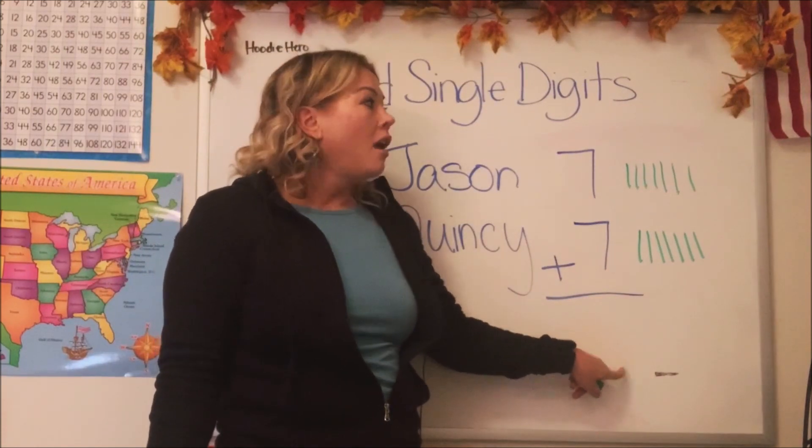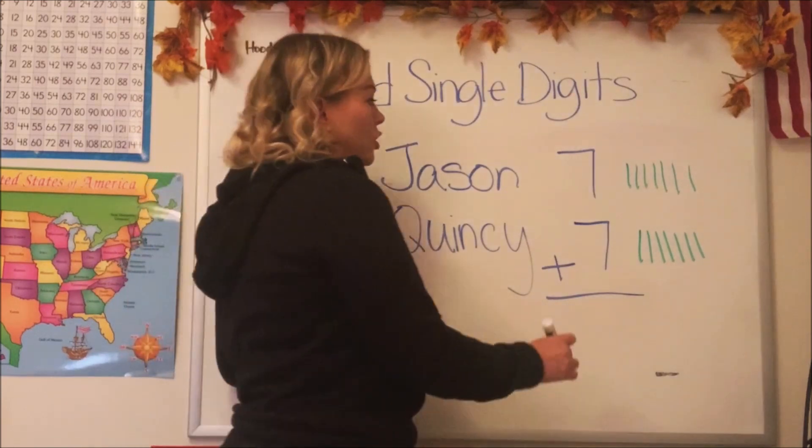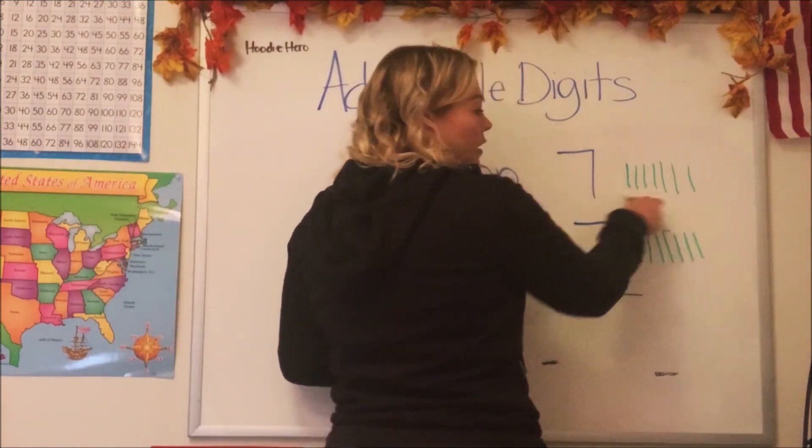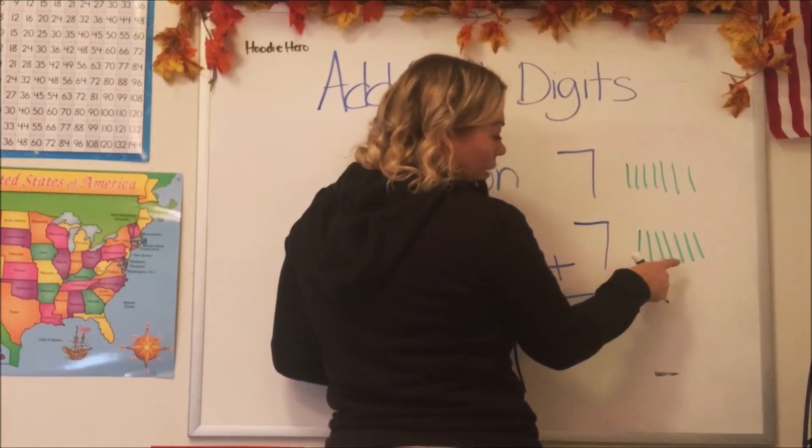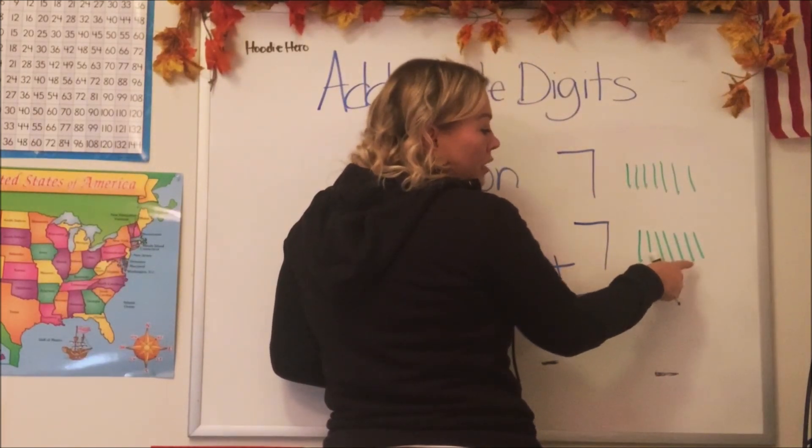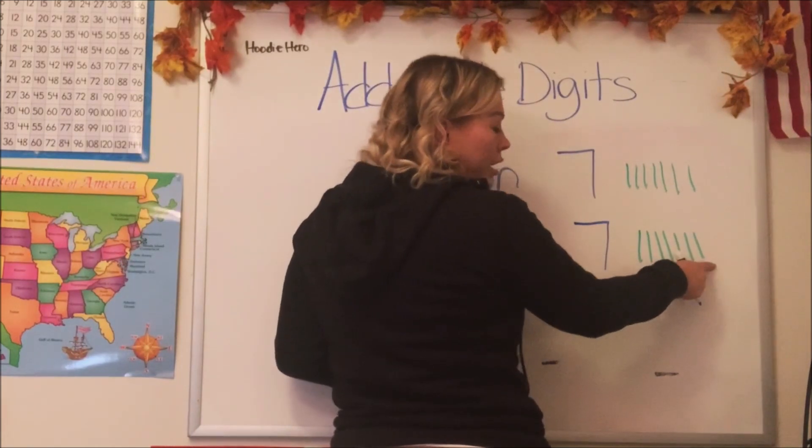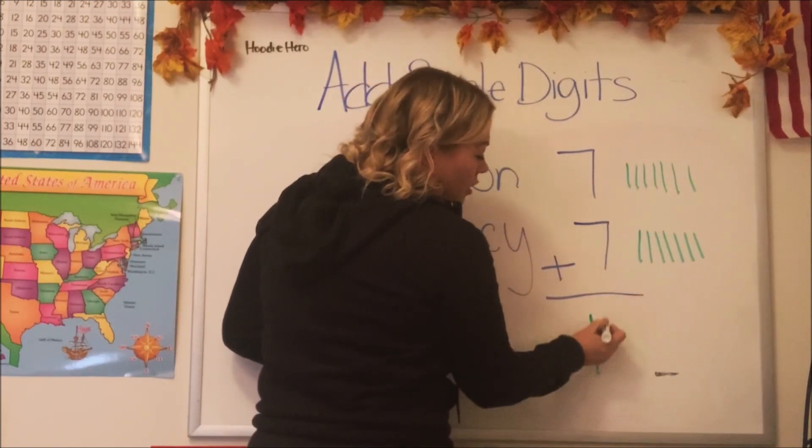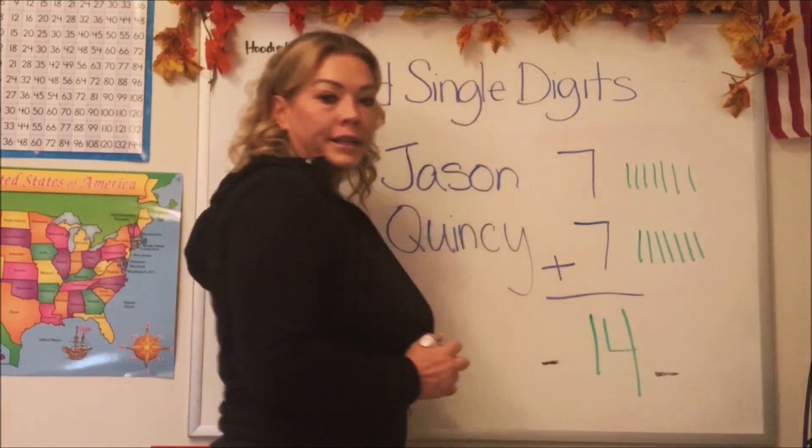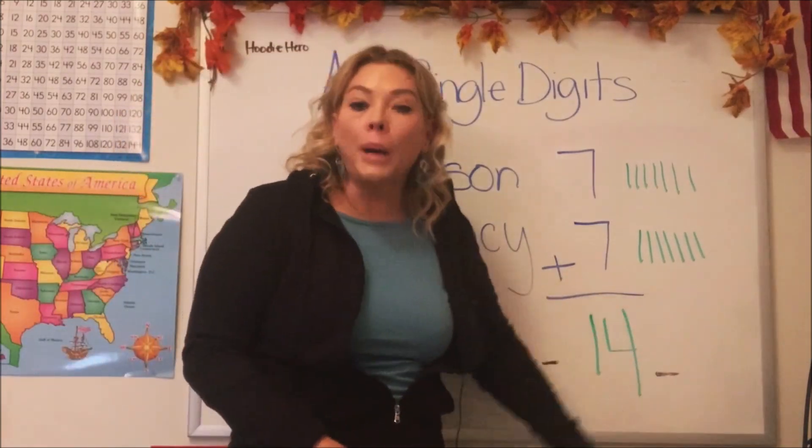Now what do we need to do to find out our answer? Do you remember? We need to count all of the lines together. Let's do it. So we know this is seven, right? So let's start from here. Seven, eight, nine, ten, eleven, twelve, thirteen, and fourteen. So when we add all the puzzles together, we have fourteen total. So our answer is fourteen puzzles.